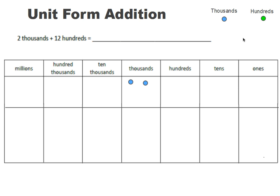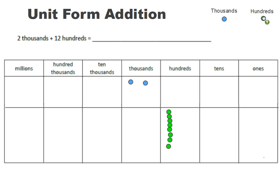Let's show twelve hundreds. The green chips are going to represent one hundred each, and I need to put twelve of them into the hundreds place. So that's three hundreds, four hundreds, five hundreds, six hundreds, seven hundreds, eight hundreds, nine hundreds, ten hundreds, eleven hundreds, twelve hundreds. Now I have twelve hundreds.